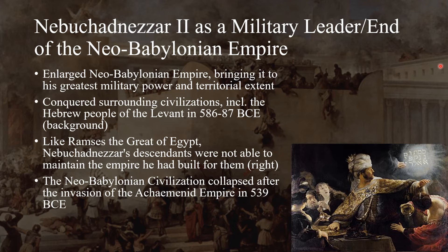Like Ramses the Great of Egypt, Nebuchadnezzar's descendants were not able to maintain the empire that Nebuchadnezzar had built. We see King Balthazar, one of Nebuchadnezzar's successors, who in the Hebrew Bible was warned by God that he and the Babylonian Empire would be destroyed for their pride and for their greed and violence.